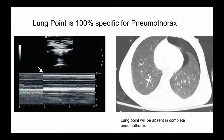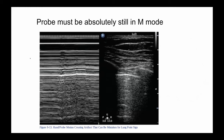With correct technique, identifying the lung point is 100% specific for pneumothorax. M-mode is very sensitive to movement, so if you make even small movements with your probe while in M-mode, you can mimic a fake lung point — the alternating seashore and barcode pattern can be created by probe movement, visible even above the pleural line. The key point: keep the probe absolutely still when recording M-mode.